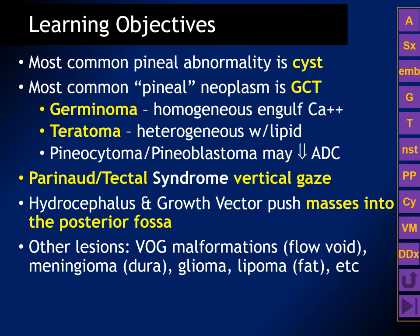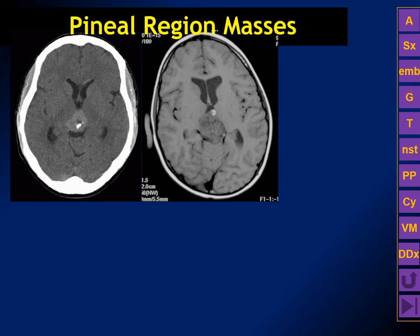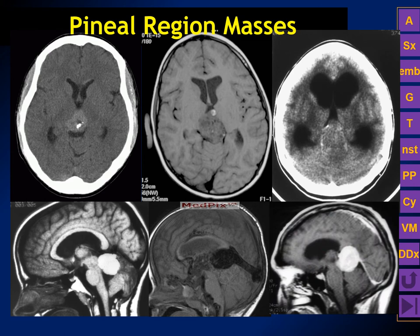Pineal region masses cause Parinaud or tectal syndrome, interfering with vertical gaze. Tumors of the pineal region may compress the cerebral aqueduct and cause hydrocephalus, and the tumors may therefore grow through the tentorial hiatus into the posterior fossa. Other lesions occur in the pineal region, including vein of Galen malformations characterized by a flow void, meningiomas attached to the dura, gliomas, and lipomas which are composed almost entirely of fat.